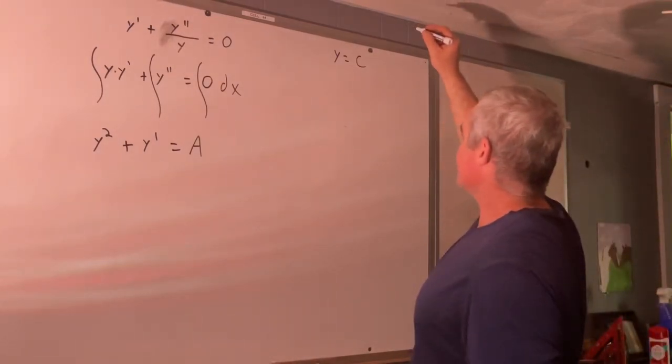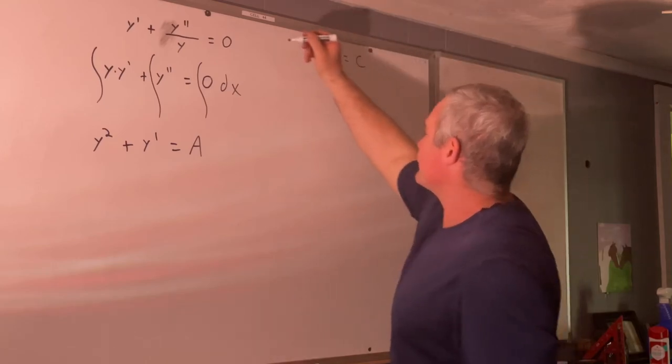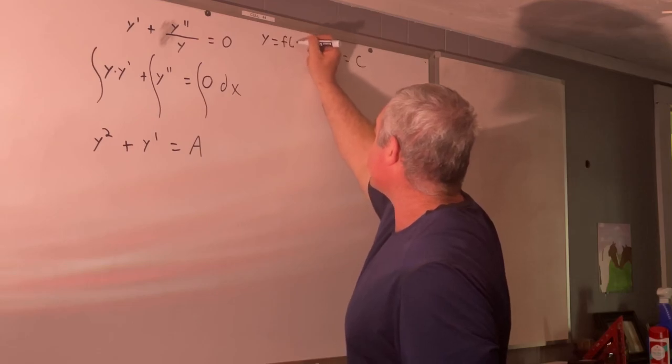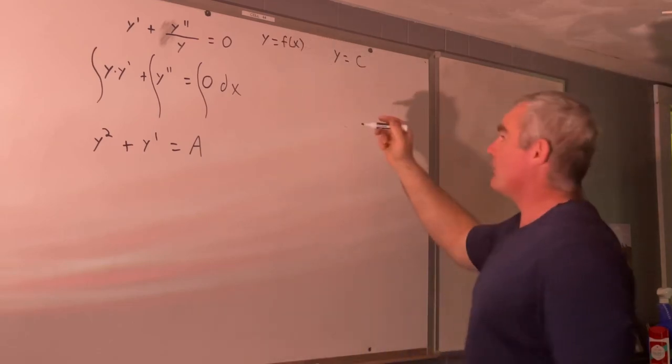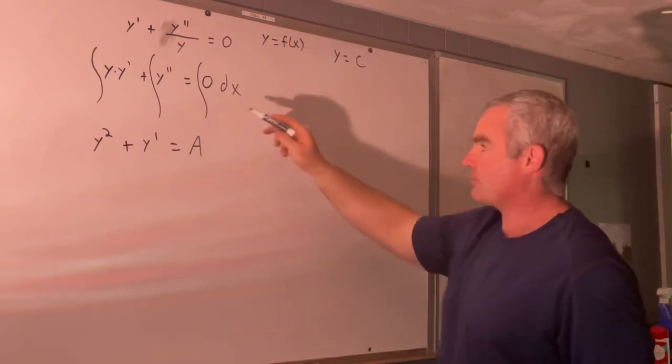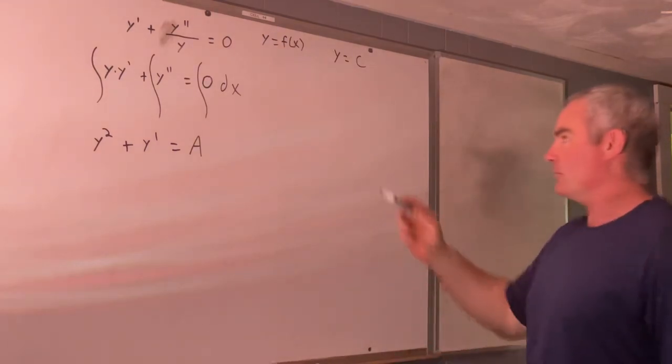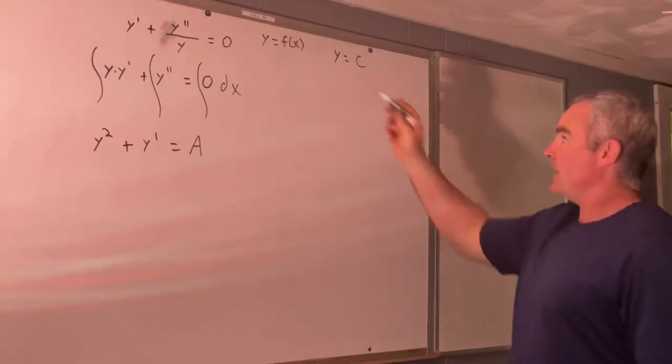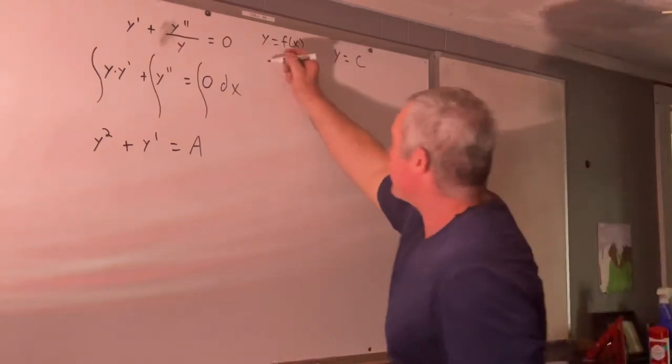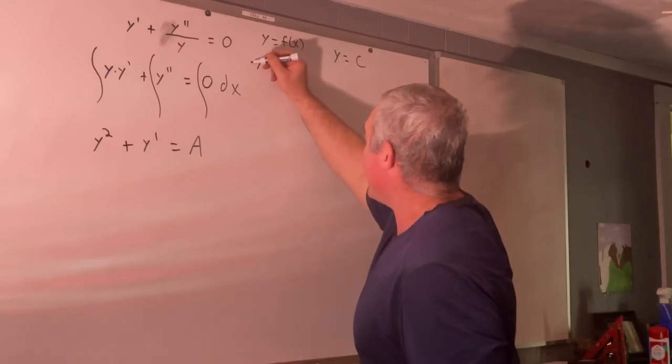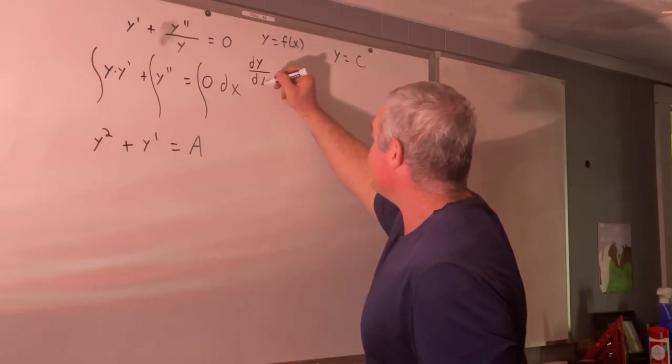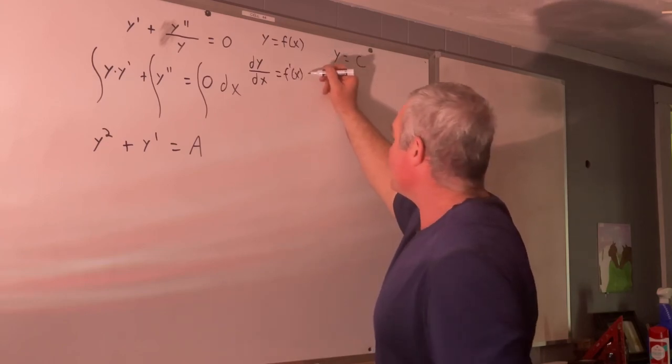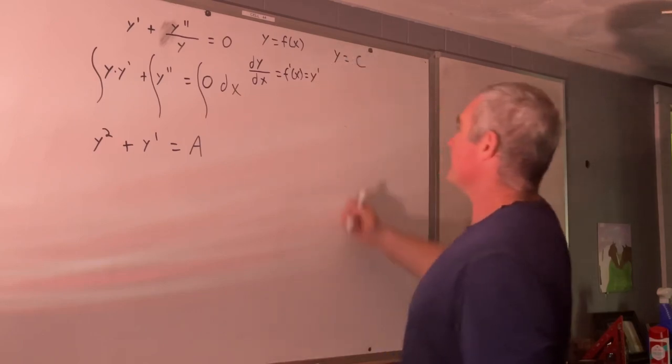So now let's just make a little note up here that y is a function of x. And I should have done that before since I integrated this with respect to x. We were integrating with respect to x on all of these things. So now that we have y is equal to f of x, we can say that dy dx is equal to f prime of x, which is equal to y prime.